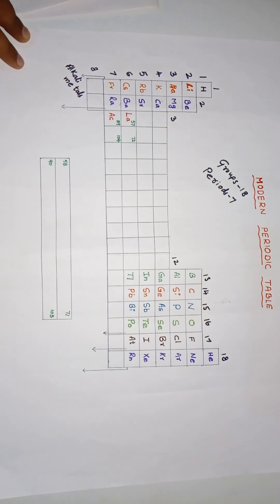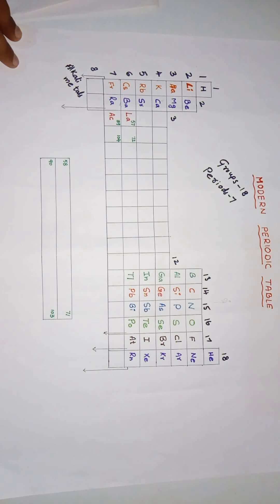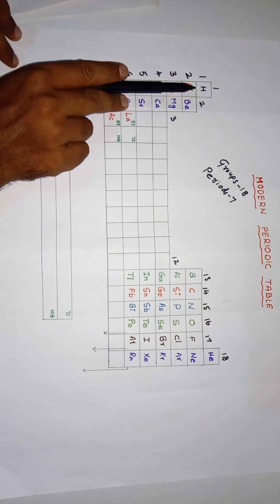Why are lithium, sodium, potassium, rubidium, cesium, and francium called alkali metals? Because when these metals react with water they form strong bases, and also these were obtained from plant ashes. These first group elements are also called the most reactive metals of the periodic table.